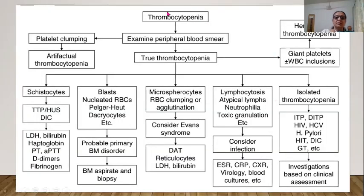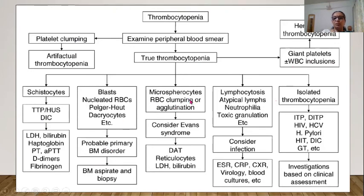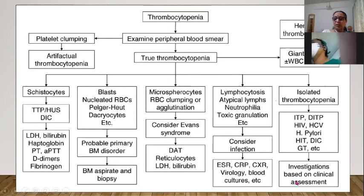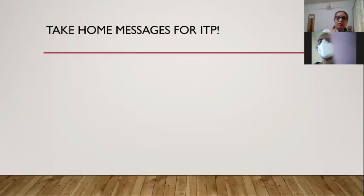Approach to thrombocytopenia summary: On peripheral blood smear, if there is platelet clumping it is artifactual. If truly low platelets, assess platelet size — giant platelets with WBC inclusions suggest hereditary thrombocytopenia. Other abnormal cells: schistocytes suggest TTP/HUS; blasts suggest bone marrow disorder; microspherocytes suggest Evans syndrome; atypical lymphocytes suggest leukemia or infections. Isolated true thrombocytopenia most commonly represents ITP — primary or secondary — or drug-induced ITP.